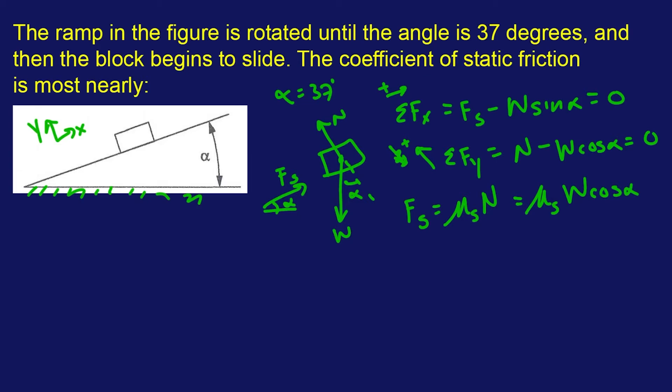And then we can plug that back into the horizontal, or horizontal relative to the ramp, equation. So you say that μs W cosine alpha minus W sine alpha equals 0.